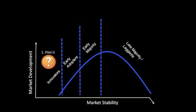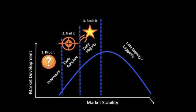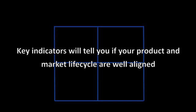In order to align the product market lifecycle, you must ensure that you are piloting your product to innovators, nailing it for early adopters, scaling it for the early majority, and milking it for the late majority laggards. Here are some key indicators that will tell you if your product and market lifecycle are well aligned.